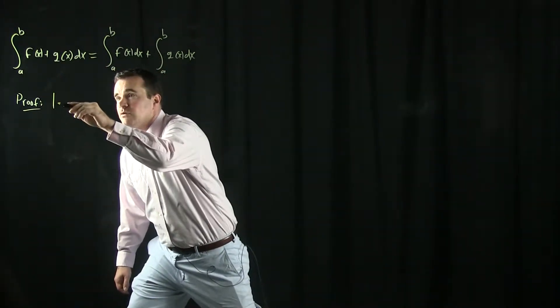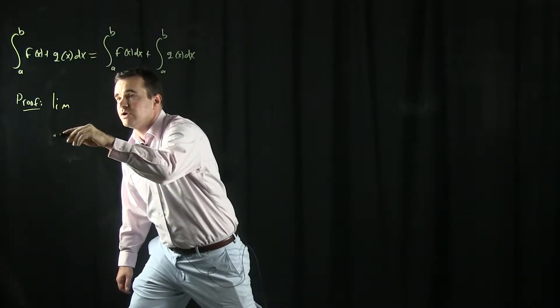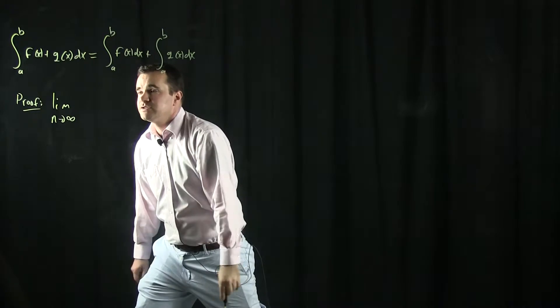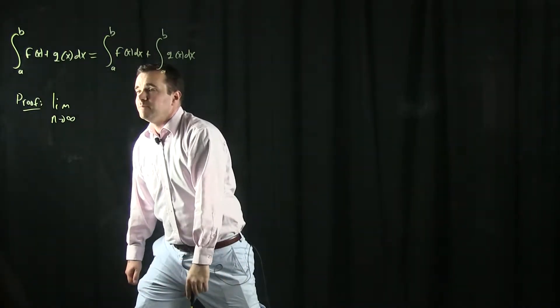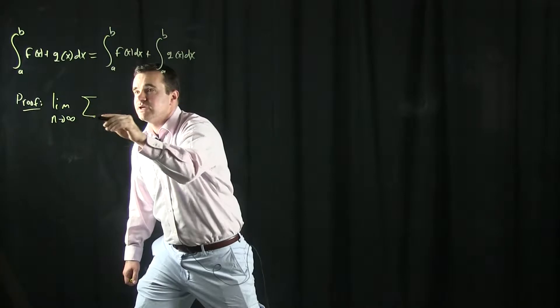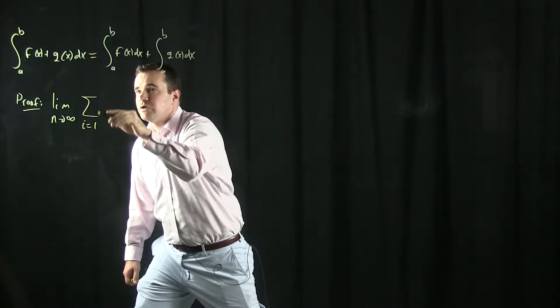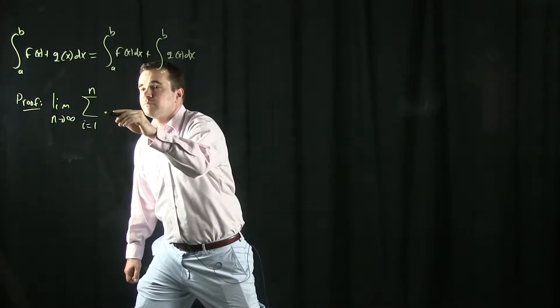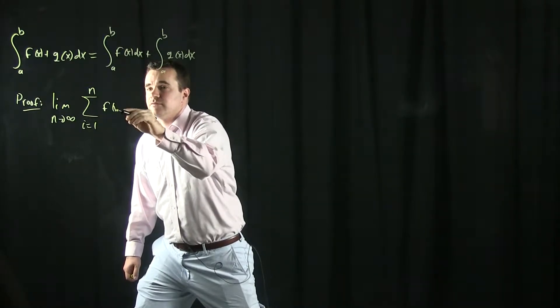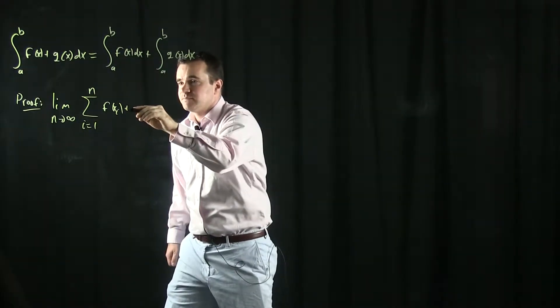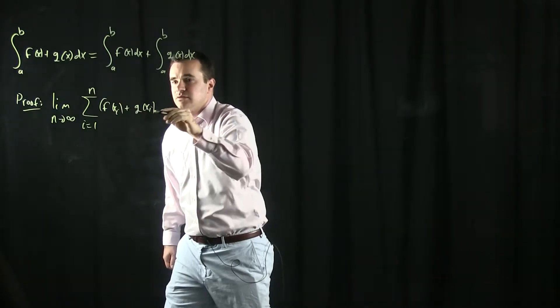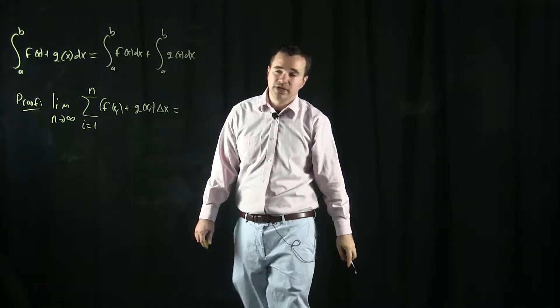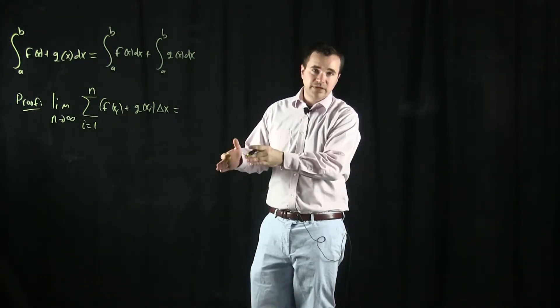Being that this is integrable, you can calculate it with right-hand endpoints or left-hand endpoints or whatever if you like. But let's use right-hand endpoints. So I'm going to take the sum, i goes from one to n. And then it's just going to be f of xi plus g of xi, quantity times delta x. And then the limit as n goes to infinity. And here delta x is b minus a over n.